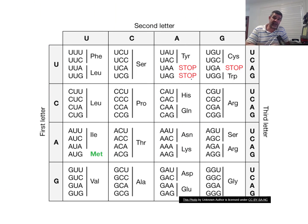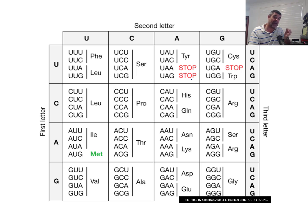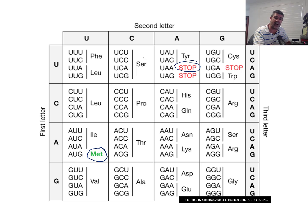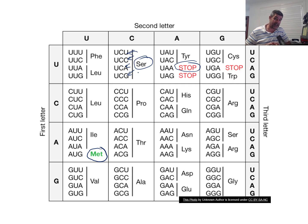Here's a codon table to give you an idea of how this works. This information would be provided in an exam since it's too complex to memorize. We look at three-letter combinations — triplets or sequences of three base pairs — and these three bases code for one amino acid. You'll also notice there's an AUG-methionine highlighted in green, which is the start codon, as well as red stop codons. Certain amino acids are coded for by multiple combinations of base sequences, which builds in redundancy — a little protection against mutation.